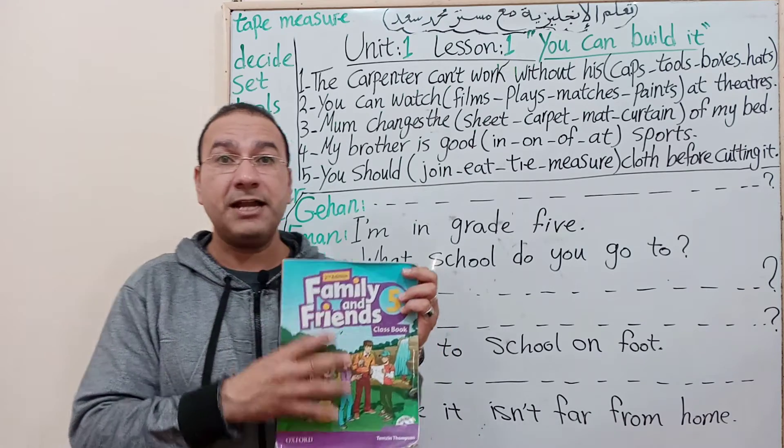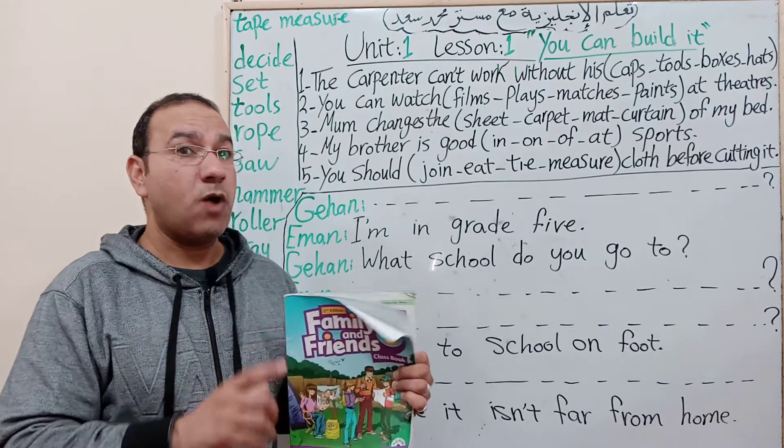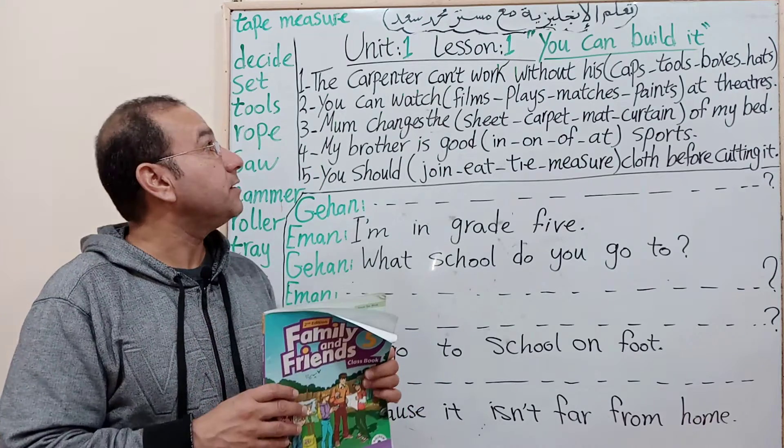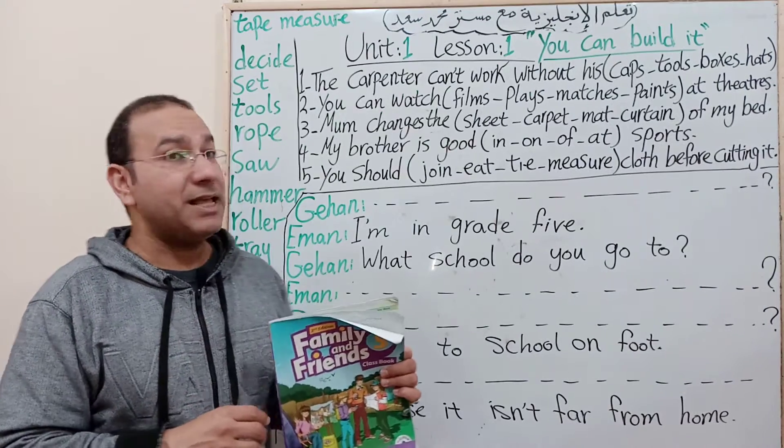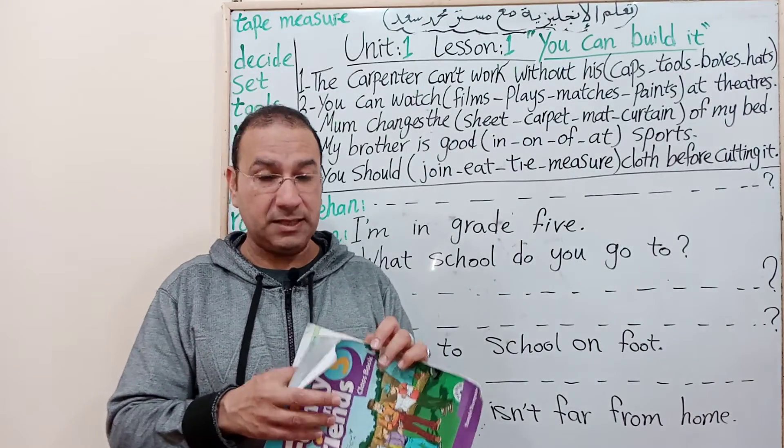This is Family and Friends 5, Unit 1, Listen 1. You can build it. 'You can build it' - meaning you are able to build it, make it, or become it.